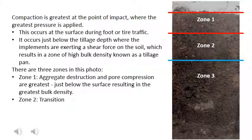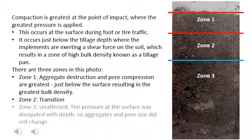Pressure at the surface is distributed to the soil particles below in a dispersing pattern that gets wider as it goes deeper, resulting in a bulb of compaction below the point of impact. Observe that pores and aggregates become more visible near the bottom of this zone. Zone 3 is unaffected, out of reach of the pressure applied at the surface. Aggregates and pores of varying shapes and sizes are readily visible.